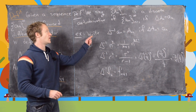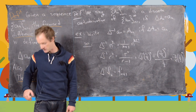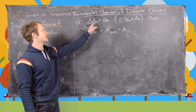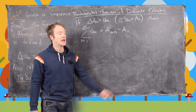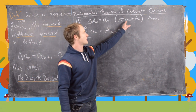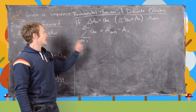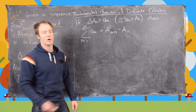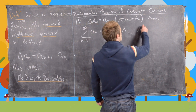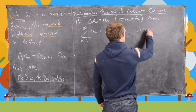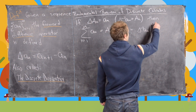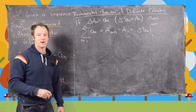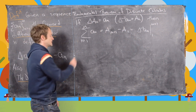Now we tie it all together with the fundamental theorem of discrete calculus: if delta A_n = a_n — that is, A_n is the discrete antiderivative of a_n — then the sum from n=1 to m of a_n equals A_{m+1} minus A_1. We can write this as the discrete antiderivative of a_n evaluated from 1 to m+1, making finite sums look a lot like definite integrals.